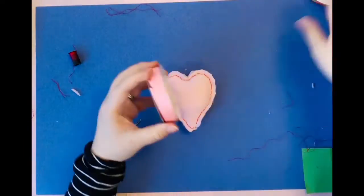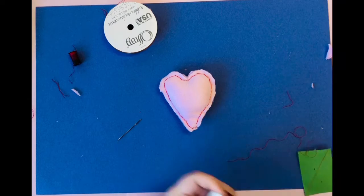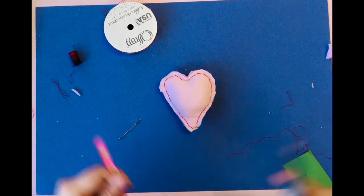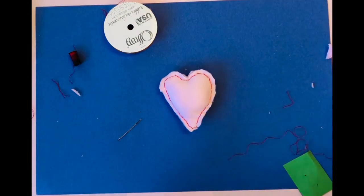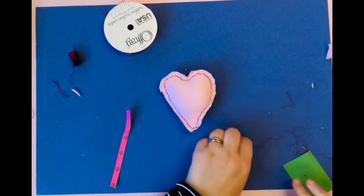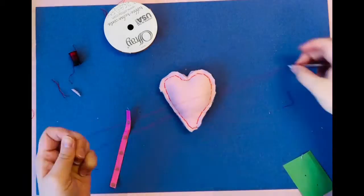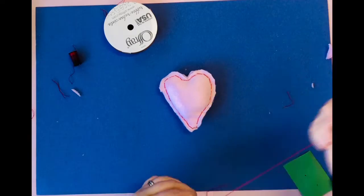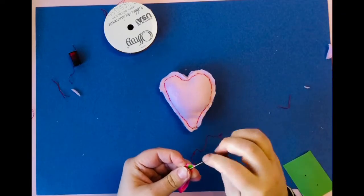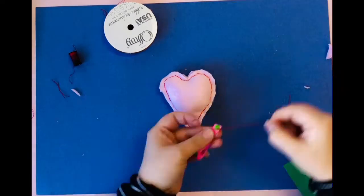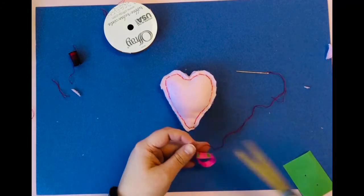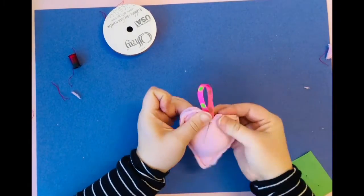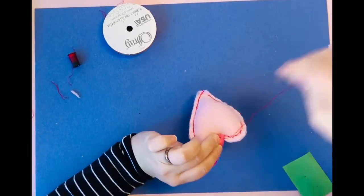Rethread your needle and you're going to sew your ribbon on. Your ribbon and fluff should also be with your kit. I sewed the ribbon together before sewing it to my heart. That made life a little easier.